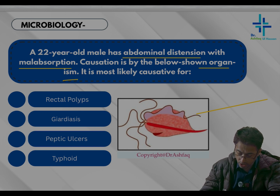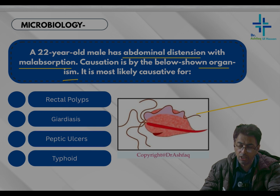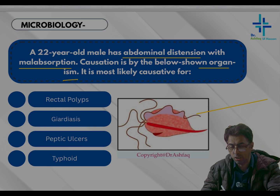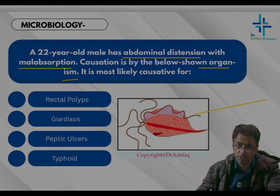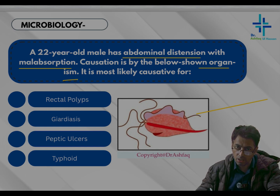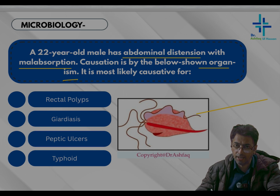The options are rectal polyps, GI disease, peptic ulcer, and typhoid. This is an image-based question, and first of all you have to recognize the organism shown. The figure is showing Giardia lamblia — so that you know the organism.